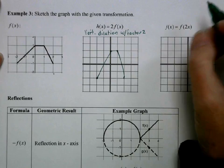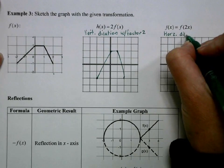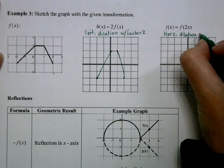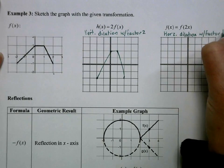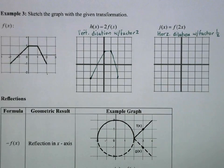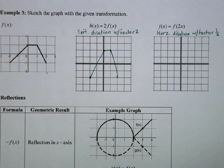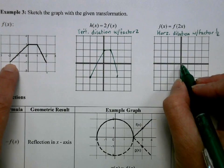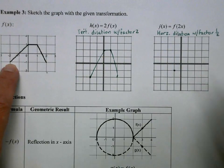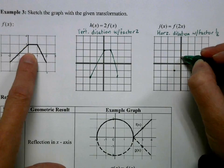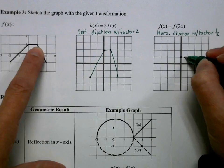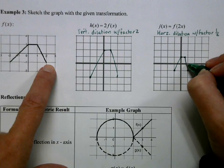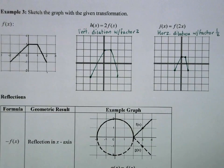This next transformation has a horizontal dilation with a factor of 1 half, so the graph gets compressed horizontally. All points get squished towards the y-axis by a factor of 1 half. The point at negative 2, negative 1 moves to negative 1, negative 1. The point at 0 stays in place. The point at 1 gets squished into 1 half, and the point at 2 gets squished into 1.